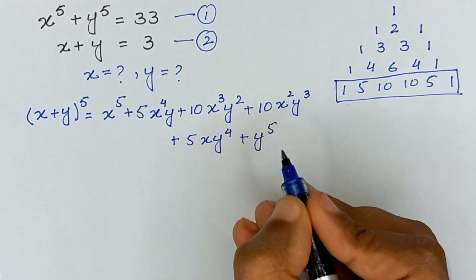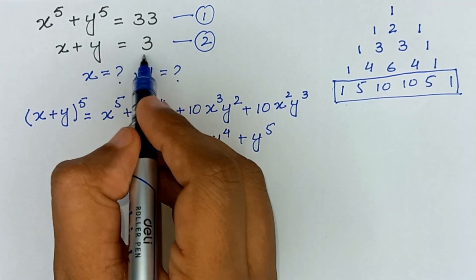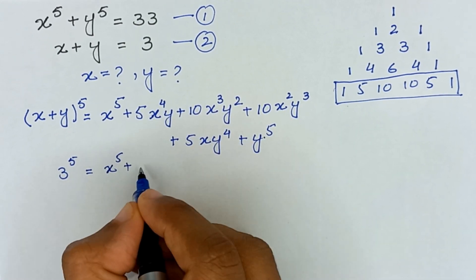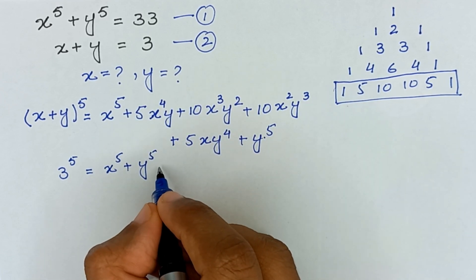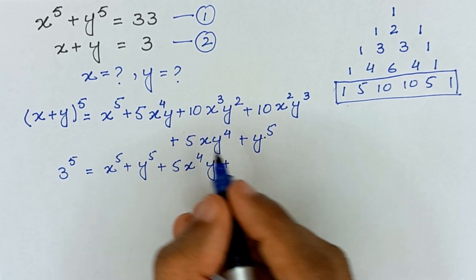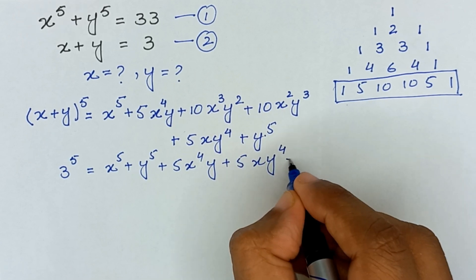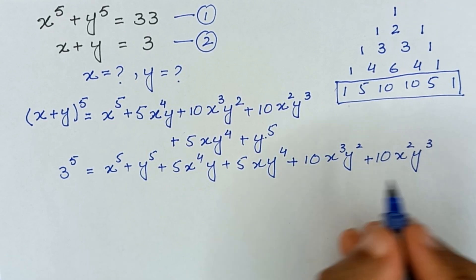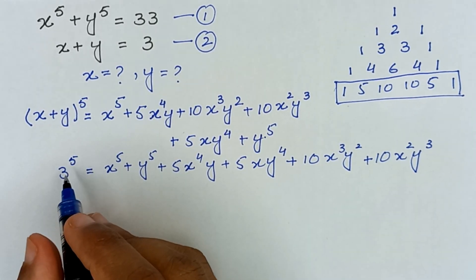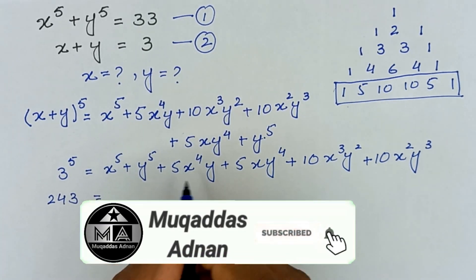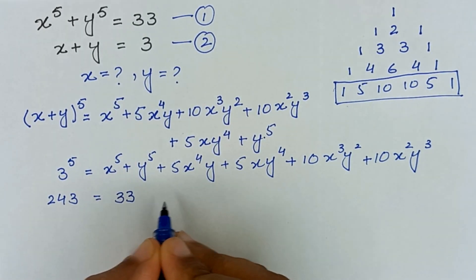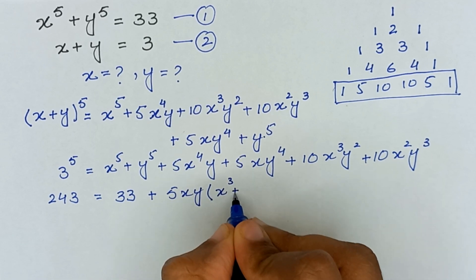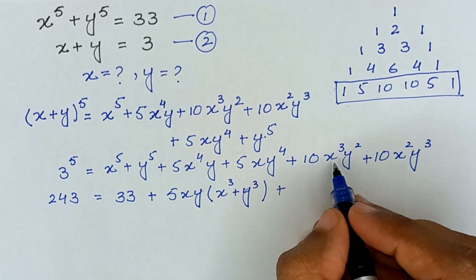Since x + y = 3, the left side becomes 3⁵. Rearranging the equation, 3⁵ equals x⁵ + y⁵ plus 5x⁴y plus 5xy⁴ plus 10x³y² plus 10x²y³. Now 3⁵ = 243 and x⁵ + y⁵ = 33, so substituting: 243 = 33 plus 5xy(x³ + y³) plus 10x²y²(x + y).